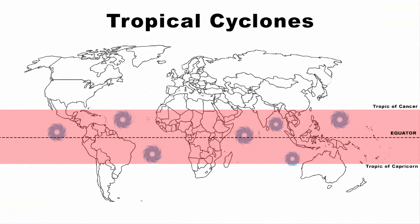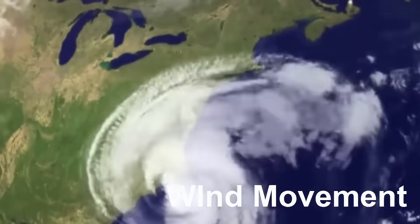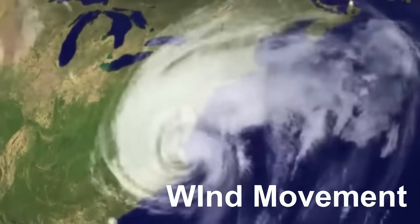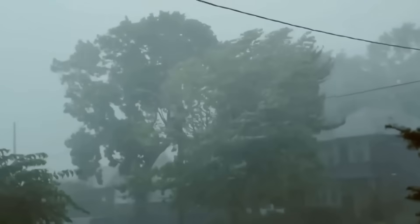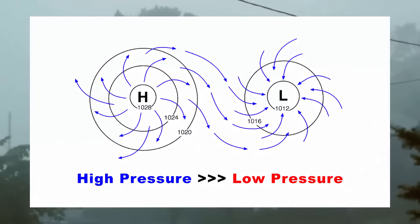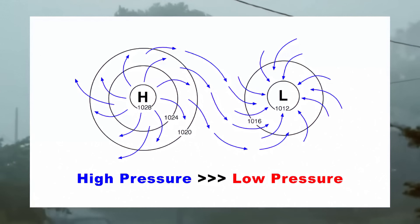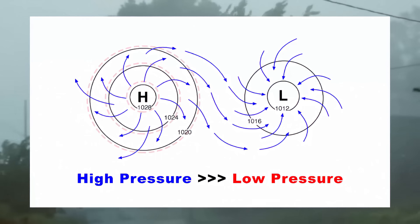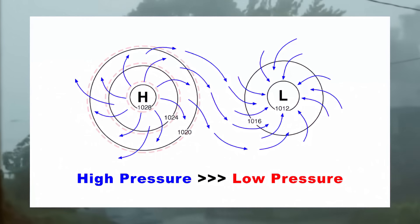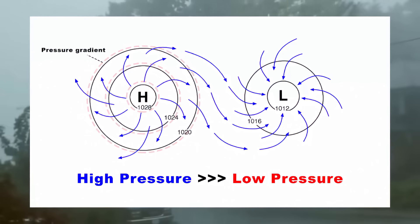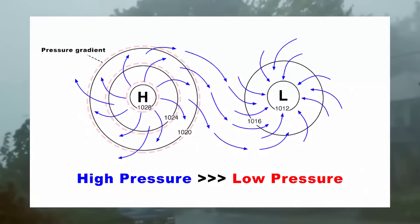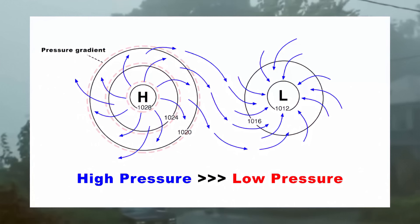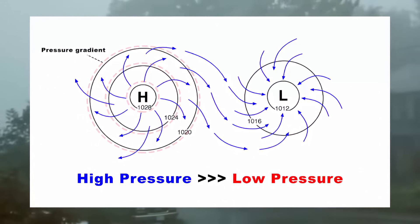Now that you have understood the main things about the tropical region, let's understand wind movement. Wind movement is determined by low pressure and high pressure systems. It is the differences in atmospheric pressure that create a pressure gradient and make wind move, and wind always blows from areas of high pressure to low pressure areas.